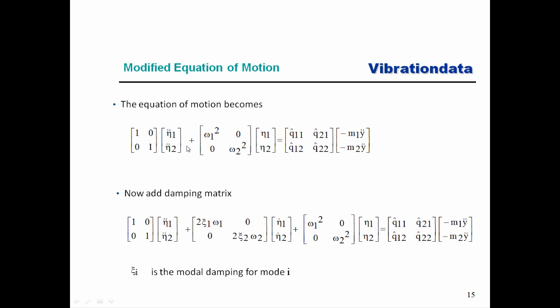Now we want to add damping with a bit of hand-waving. We introduce a diagonal damping matrix with modal velocity terms: the diagonal entries are 2·ζ₁·ω₁ and 2·ζ₂·ω₂, where ζ is the modal damping ratio and ω is the natural frequency for each mode. This gives us a system of uncoupled equations, which are much easier to solve. We're now ready to proceed with a modal transient solution.